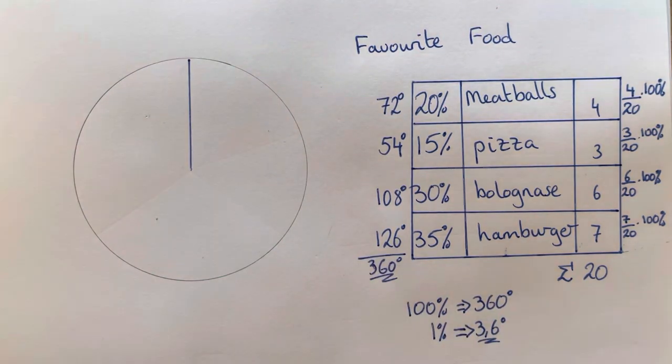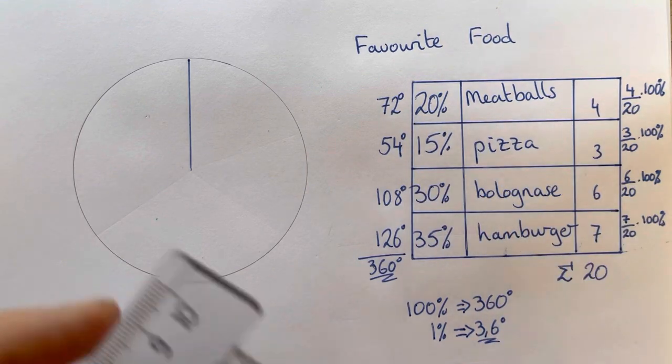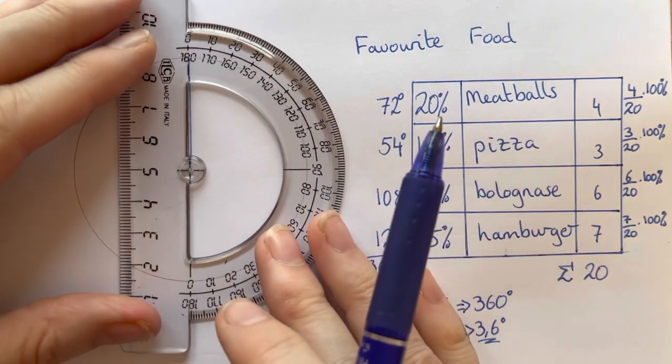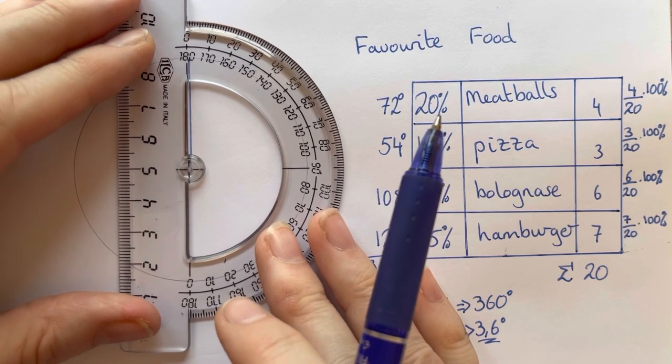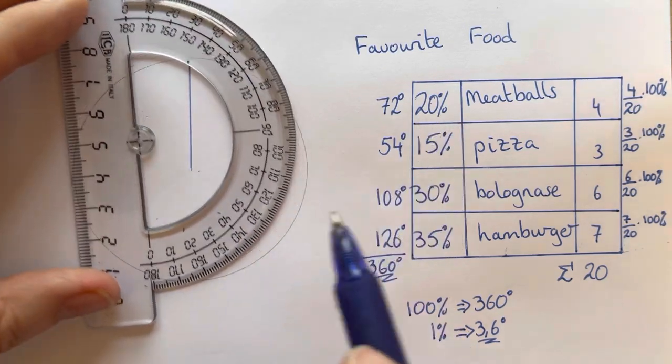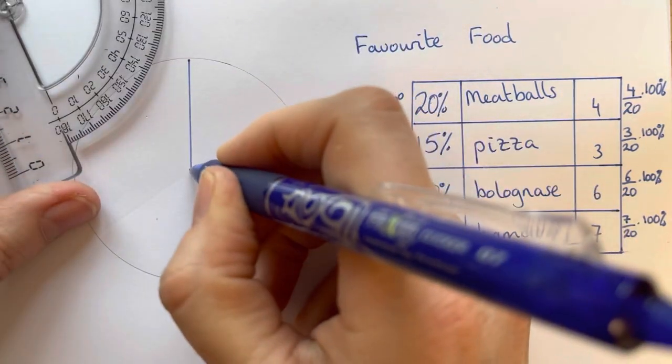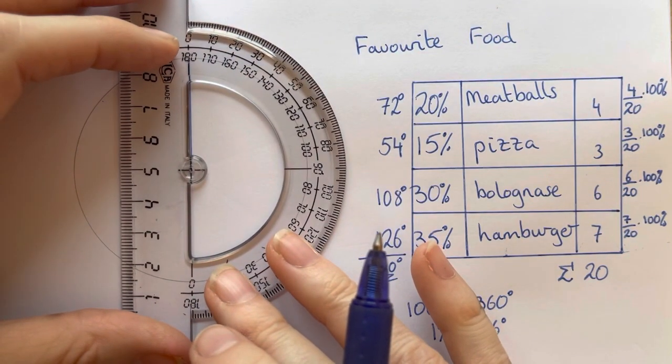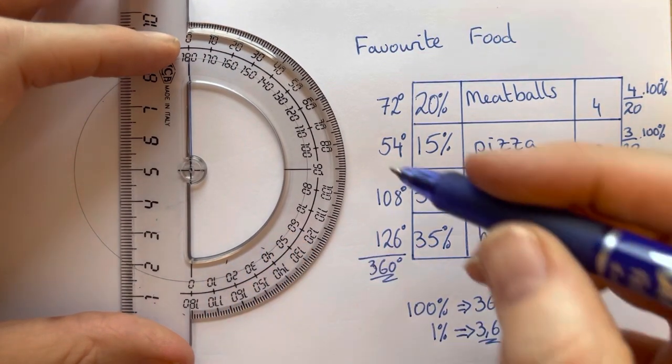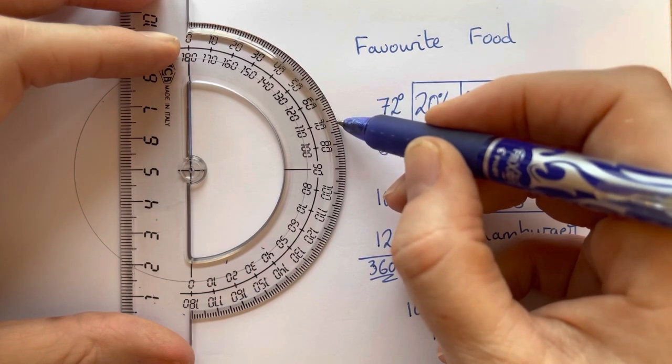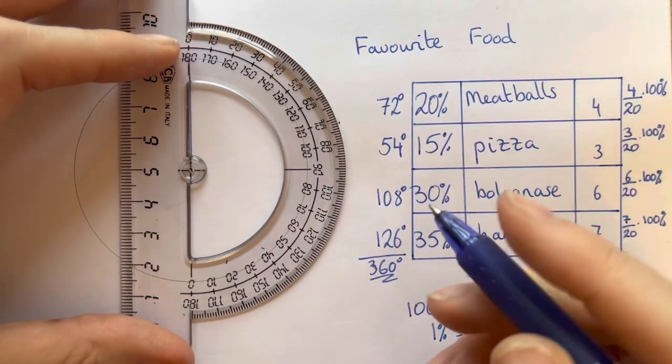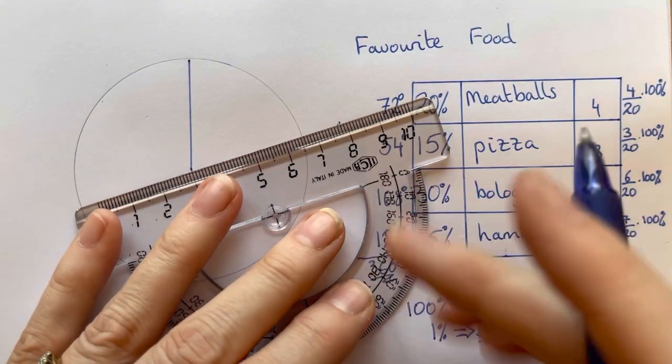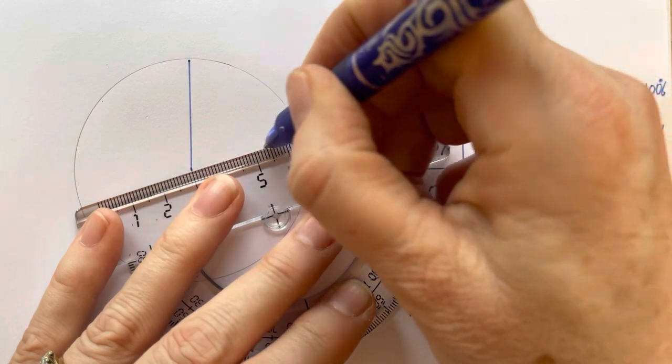So now we've got all of our data. We know that for meatballs we need 72 degrees and we draw it in the same way that we did in the last diagram. Start from our middle point, make sure we can feel the middle point here, start from our middle point and measure in 72 degrees which would be here.